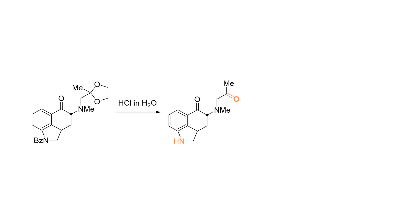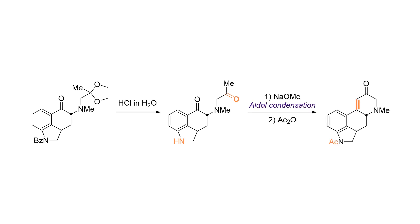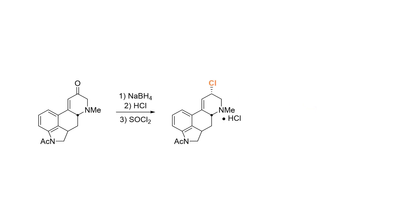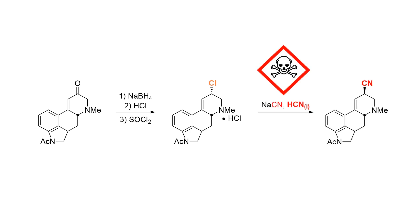After the aldol condensation under basic conditions took place and the amine was protected again, we ended up with the enone, which we still need to transform to the ring-appended acid. The team achieved this through 1,2 reduction of the enone and conversion of the resulting hydroxyl group to the corresponding chloride. The next step — substitution of the chloride with cyanide — might look simple on paper, but was literally deadly in practice.